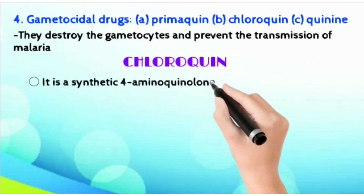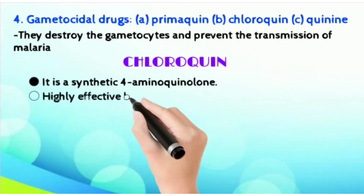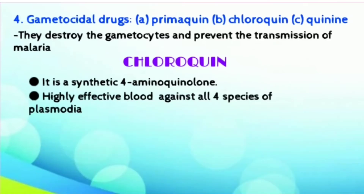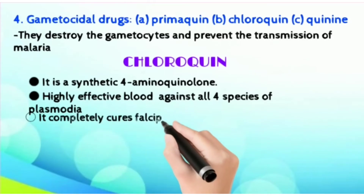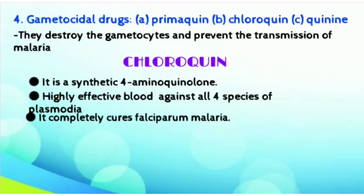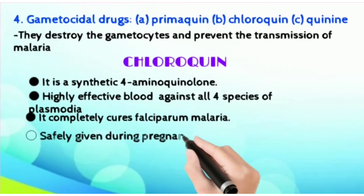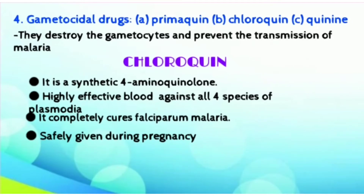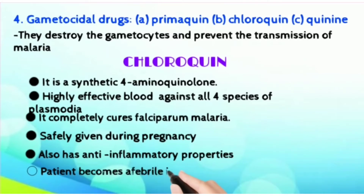Now we will talk about Chloroquine. Chloroquine is a synthetic 4-amino quinoline. It completely cures falciparum malaria. In pregnancy, it is very safely given and also has anti-inflammatory properties. The mechanism of action of this drug is not very clear, but it is a highly effective blood schizonticide against all four species of Plasmodium.